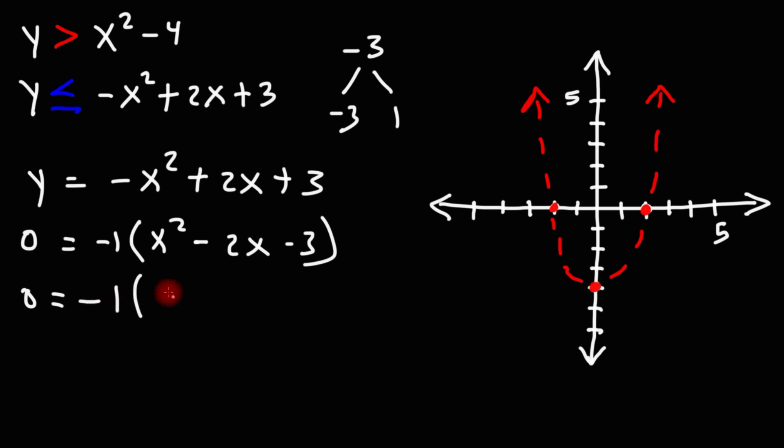So to factor it, it's going to be x minus 3 times x plus 1. Using the 0 product property, we're going to set each factor equal to 0. And we're going to solve for x. So adding 3 to both sides, we get x is equal to 3.